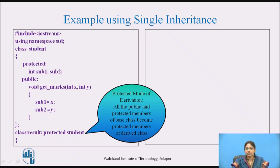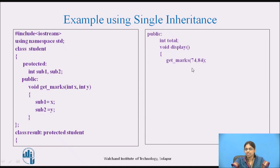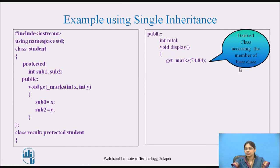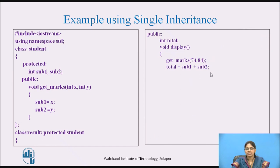Under protected mode of derivation, all the public and protected members of the base class become protected members of the derived class. The result class has a data member 'total' and a member function 'display'. The display function calls the inherited member function 'getmarks'. Since the class is derived under protected mode, the getmarks function cannot be accessed from main, so it is called from within the result class. When getmarks is called, it assigns 74 to subject1 and 84 to subject2, then calculates and displays the total marks.